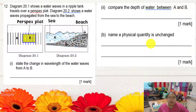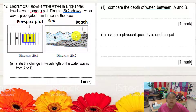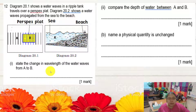Now the structured question. Diagrams 20.1 and 20.2 show two different situations: a ripple tank and a beach. From region A to region B, the wavelength becomes smaller. For the beach, as the water gets closer to shore, the wavelength also becomes smaller. Both situations are about refraction. The first question asks for the change in wavelength from A to B: the wavelength decreases.